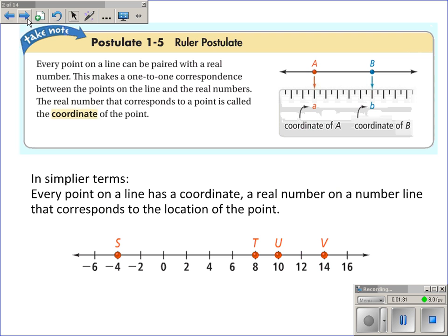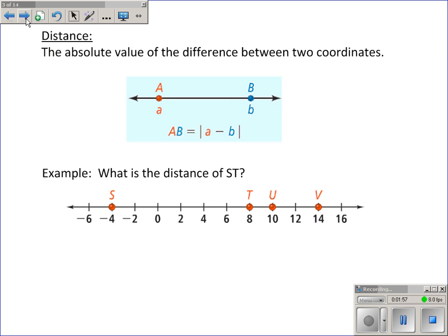Now looking at the picture, I think it'll make sense that the coordinate of S is negative 4. That's the number that corresponds with point S. The coordinate for point T is 8, the number that corresponds with that point. The coordinate of V is 14. So the ruler postulate just gives us a reason of why we can assign points on number lines numbers.